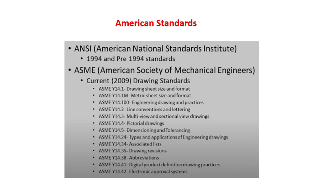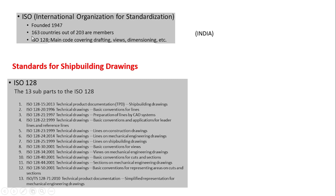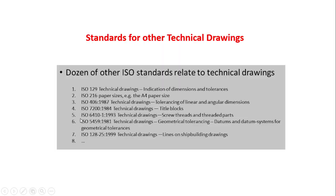ISO was founded in 1947 and has 164 member countries. ISO 128 covers views, dimensioning, and drafting — including standards for shipbuilding drawings. ISO 129 covers technical drawing dimensions and tolerances — remember this. ISO 216 covers paper sizes, such as A4.